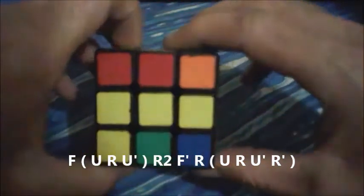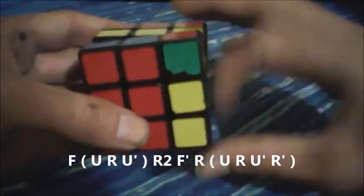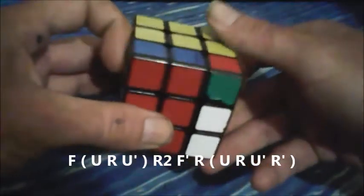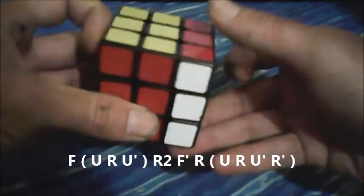Just a little bit quicker this one, so you can see the flow of the algorithm. So we go front, front, U, R, U prime, R2, F prime, R, U, R, U prime, R prime.